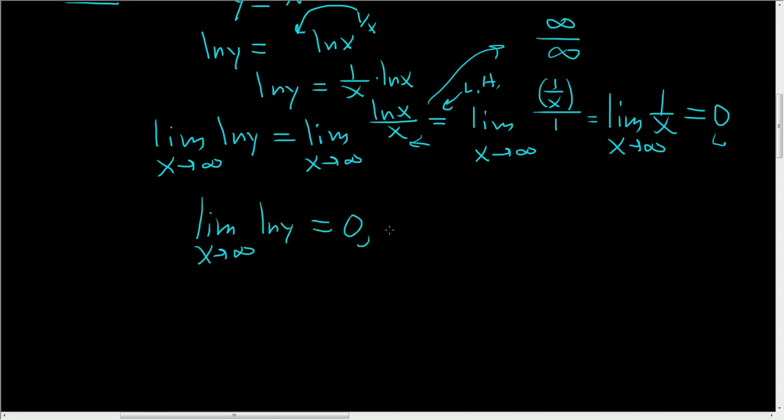Written another way, this means that the natural log of y approaches 0. So e to the natural log of y approaches e to the 0. So y approaches 1. But what's y? Y is what we started with. So x to the 1 over x approaches 1 as x approaches infinity. The answer in this case is 1.